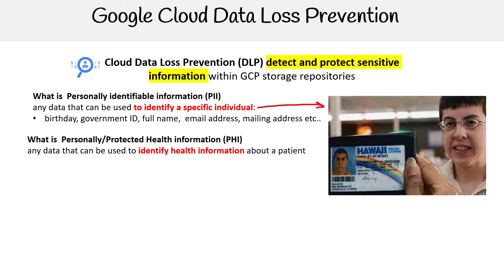Then there is protected health information — PHI. This is very similar, except it's talking about the identity and health information about a patient.